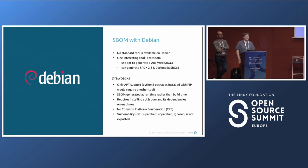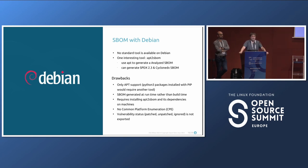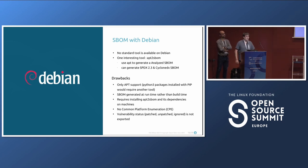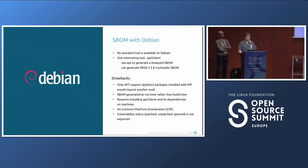The main drawback of the Debian approach is that it must be done while the target is online, so we need to install apt2sbom and all its dependencies on the target. Like Yocto, this package does not contain CPE information and does not include any vulnerability status, because it cannot insert data not available in the apt database.